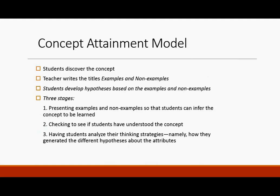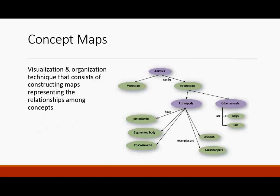The concept attainment model says that students discover the concept — the teacher writes the titles, examples, and non-examples, and students then develop hypotheses based on those in three stages: presenting examples and non-examples so students can infer the concept to be learned, then checking to see if students have understood the concept by distinguishing examples from non-examples and what the differences are, and then having students analyze their thinking strategies — how they generated different hypotheses about the attributes.